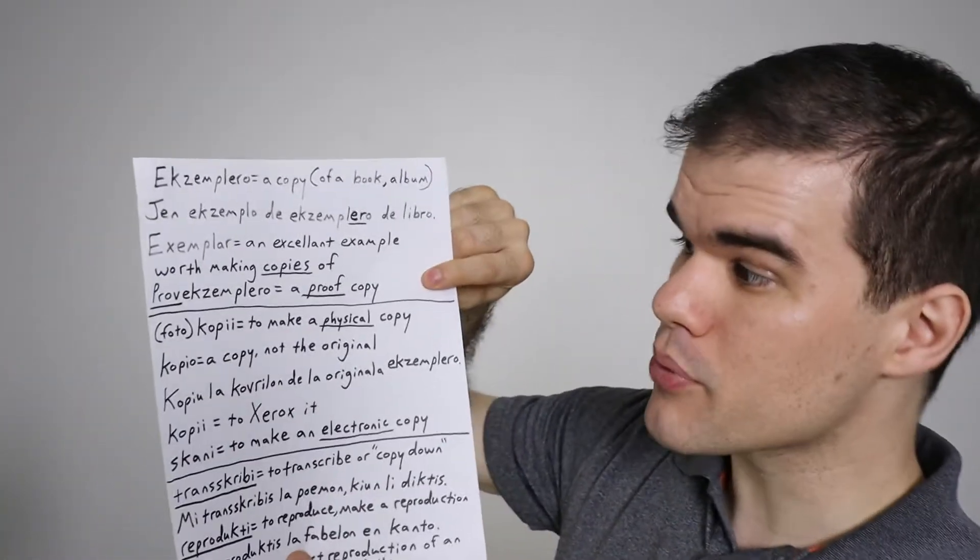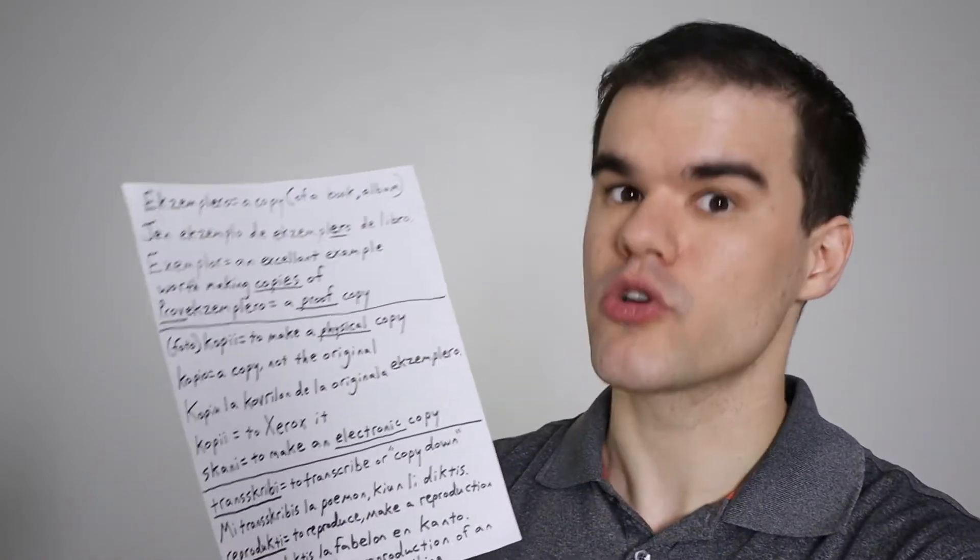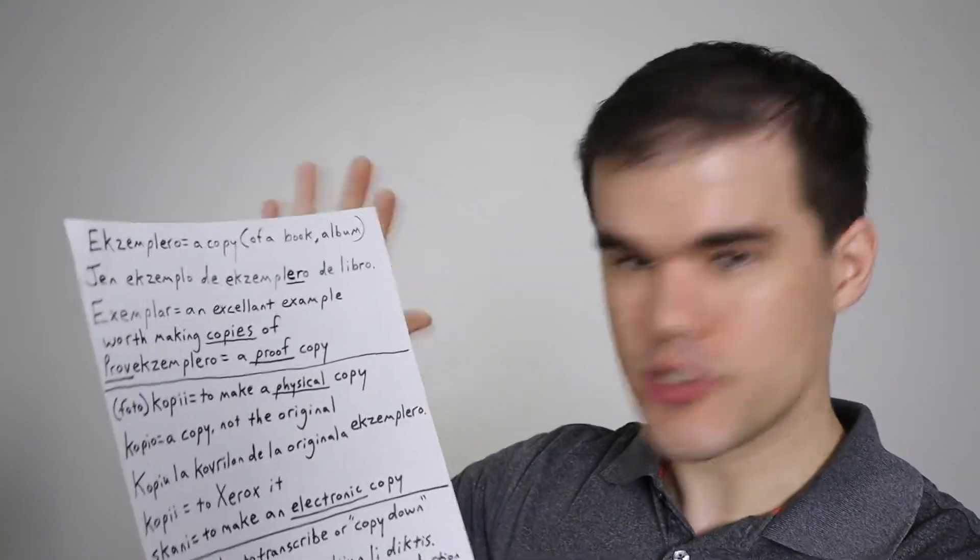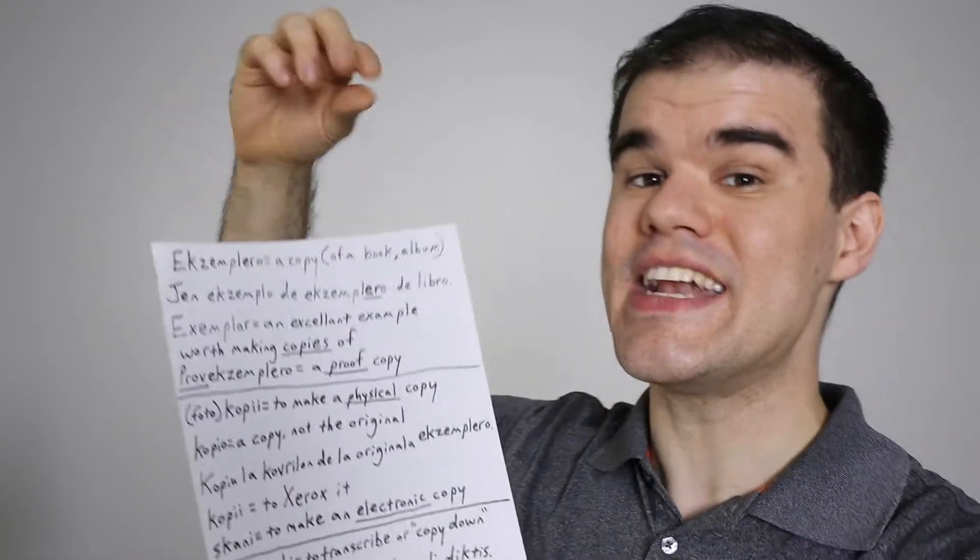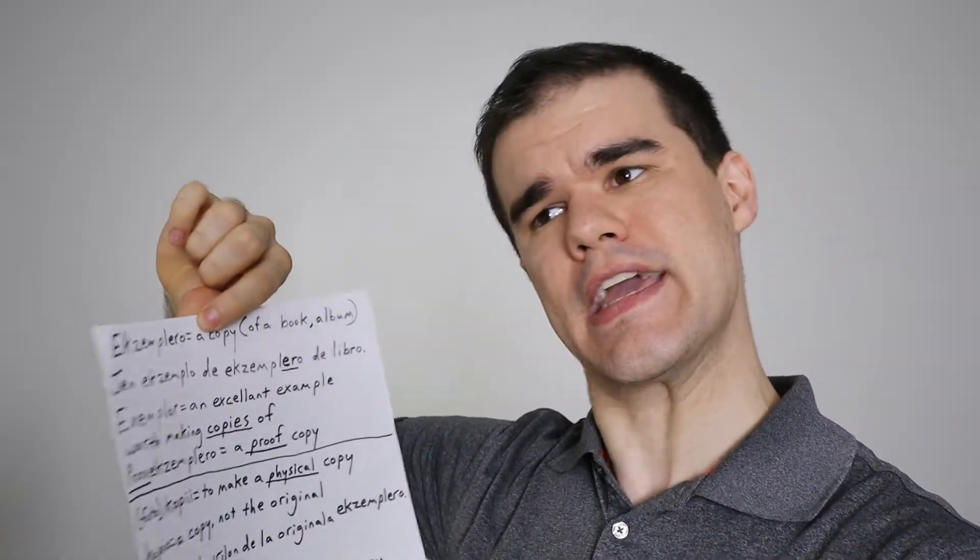And we already talked about prove exemplaroi is a proof copy. Now we'll go to copio or copii. Copii is a verb, first and foremost, whereas exemplaroi is a noun, first and foremost. There's no exemplary to be a copy of a book. No. That's a noun.